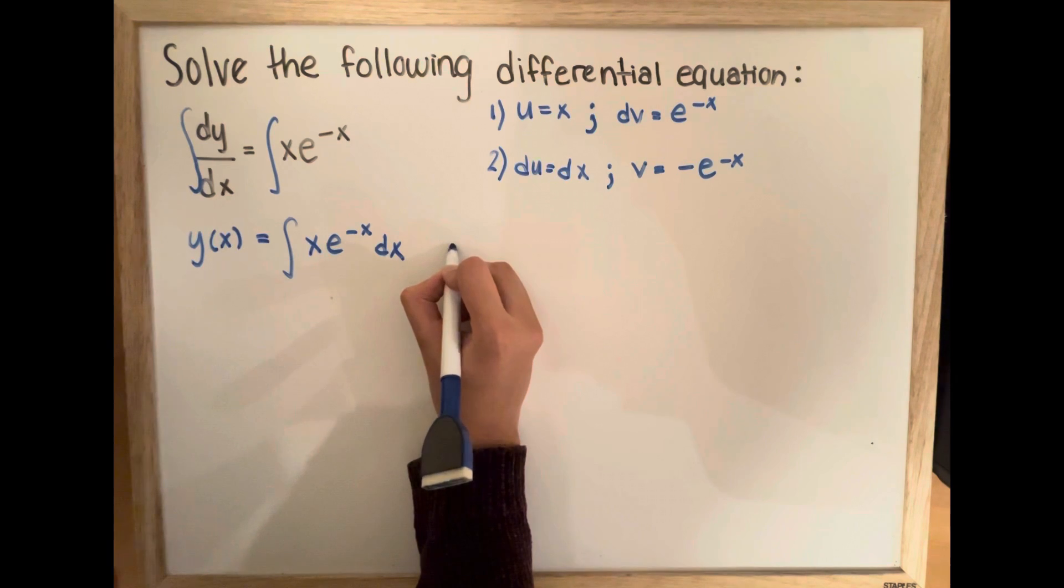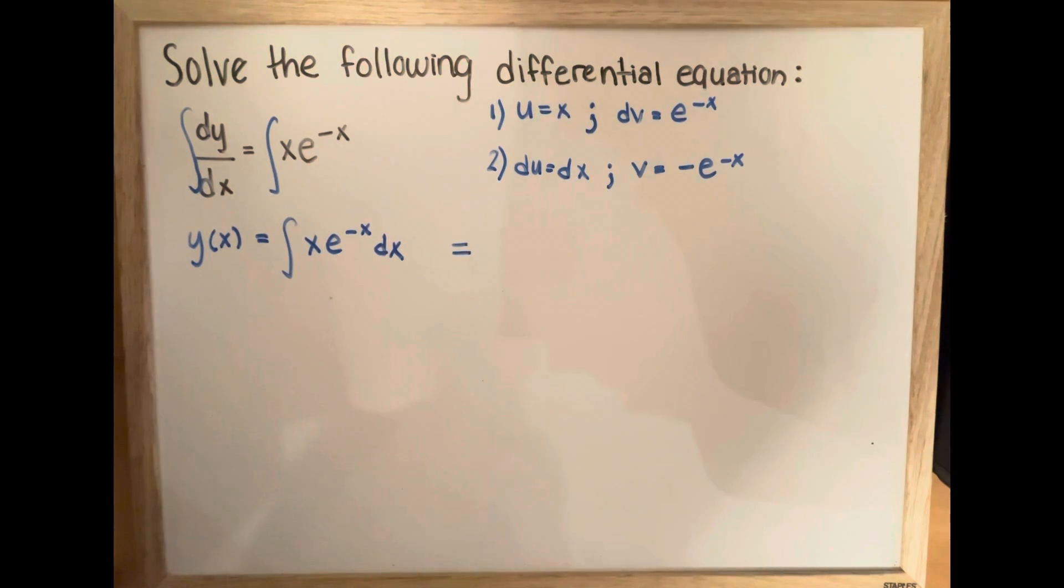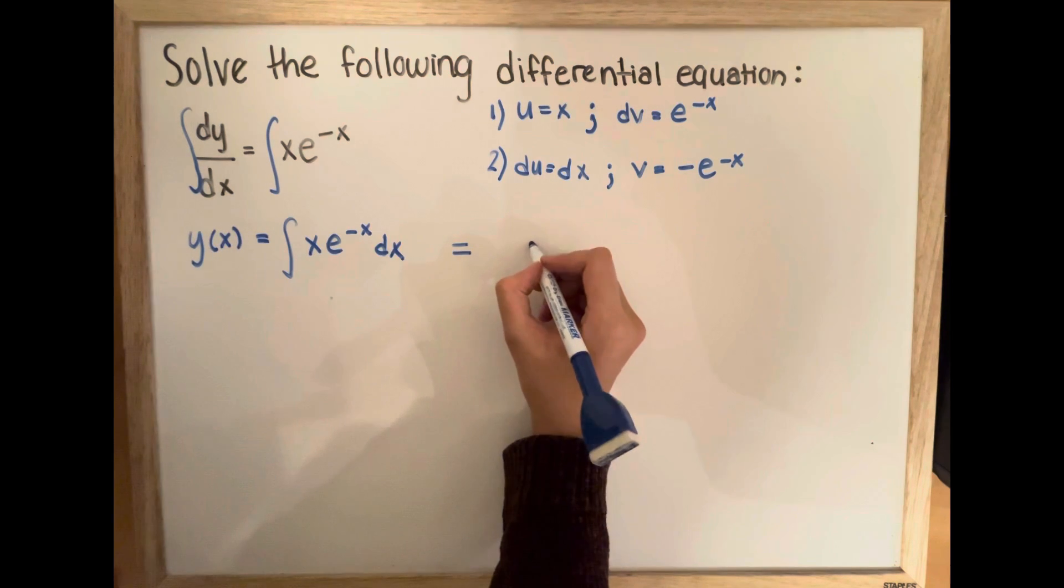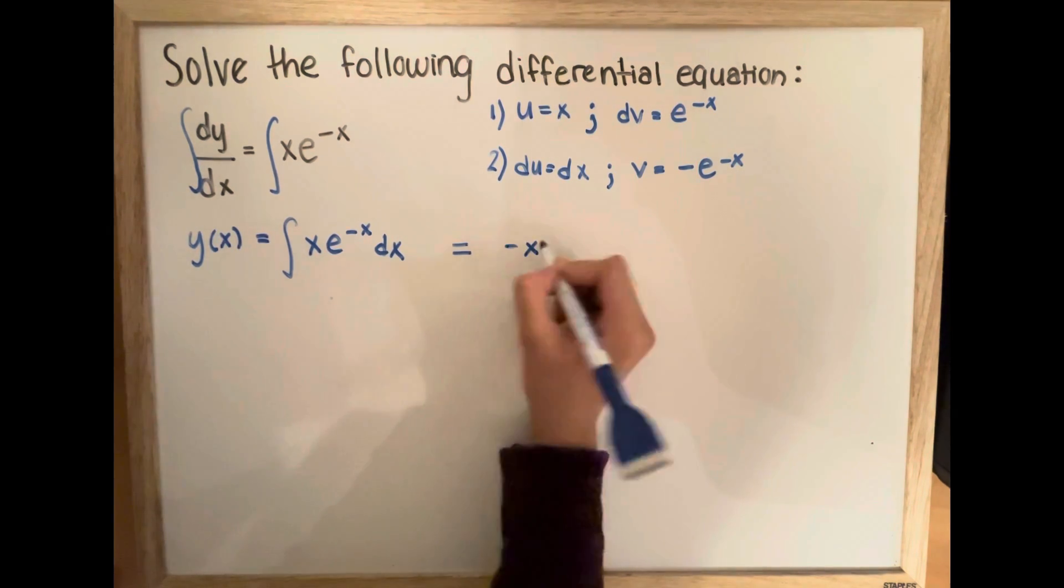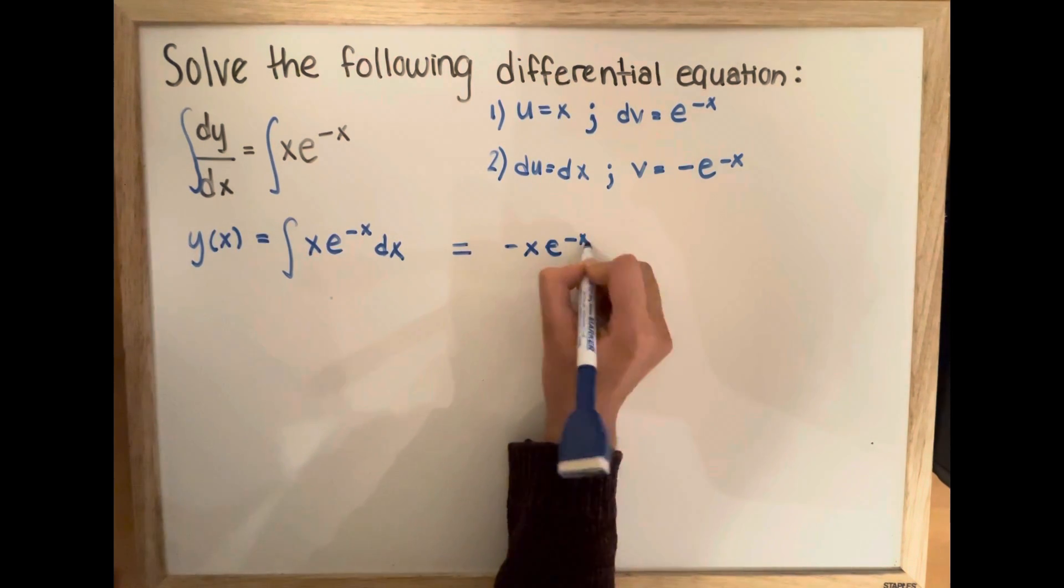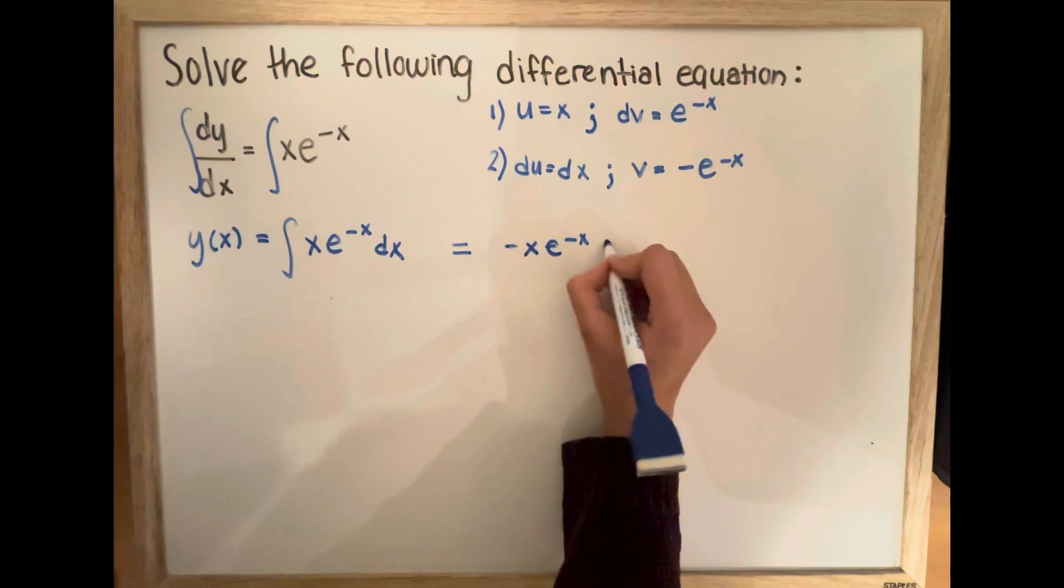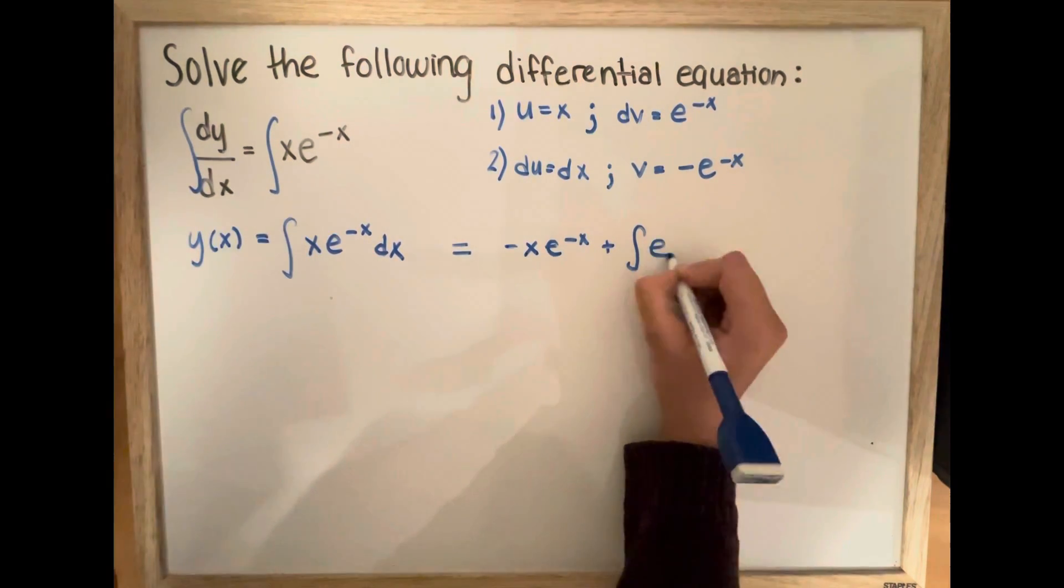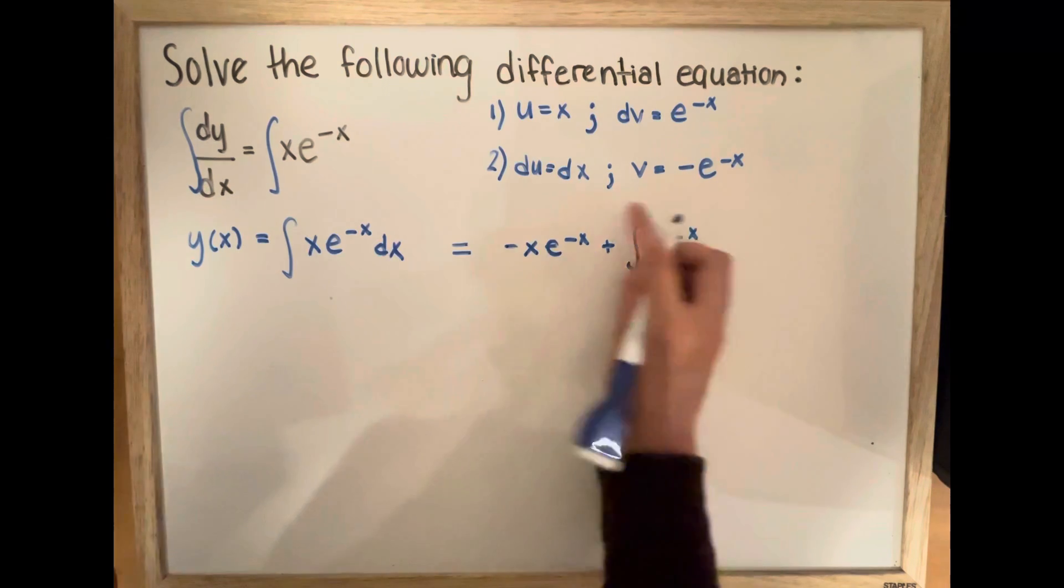this is going to equal negative x e to the negative x plus the integral of e to the negative x times dx.